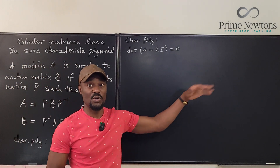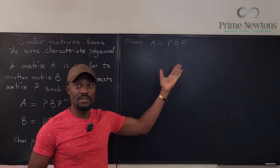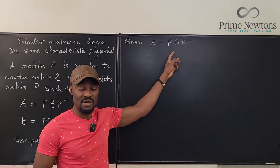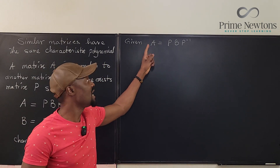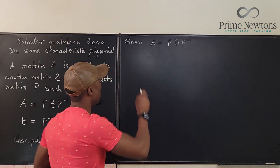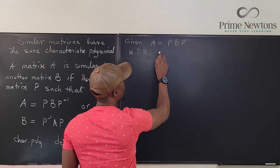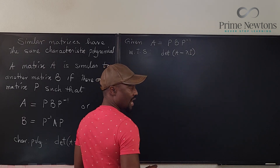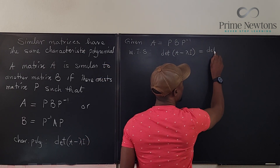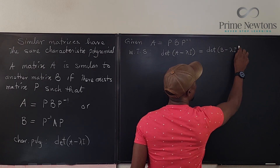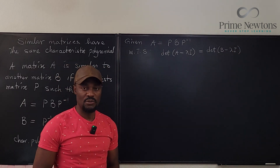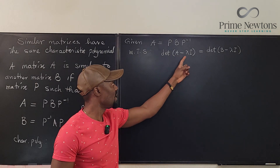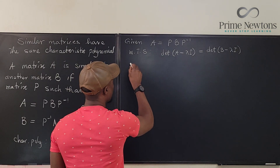Given that A equals PBP inverse, meaning they are similar matrices, we want to show that the characteristic polynomial for A equals the characteristic polynomial for B. That is, we want to show that the determinant of A minus lambda I is equal to the determinant of B minus lambda I. We start by subtracting lambda I from both sides.